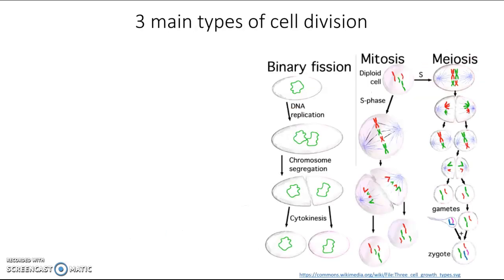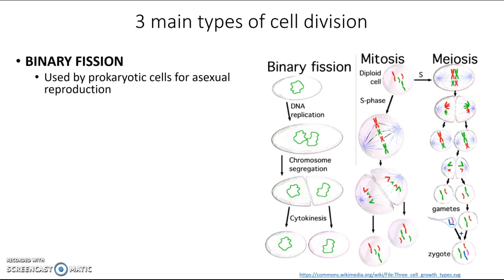There are three main types of cell division. The first one is binary fission, and this is a type of cell division that is used by prokaryotic cells for asexual reproduction, and we'll take a closer look at this process in just a moment.